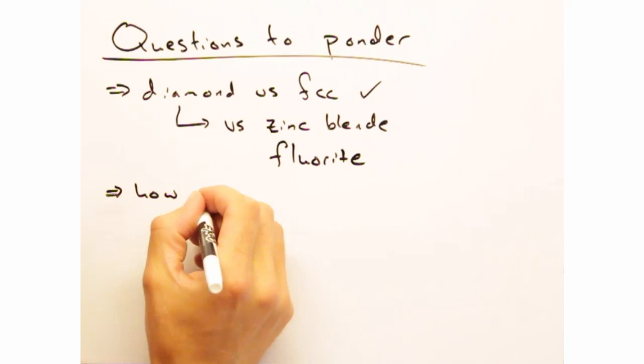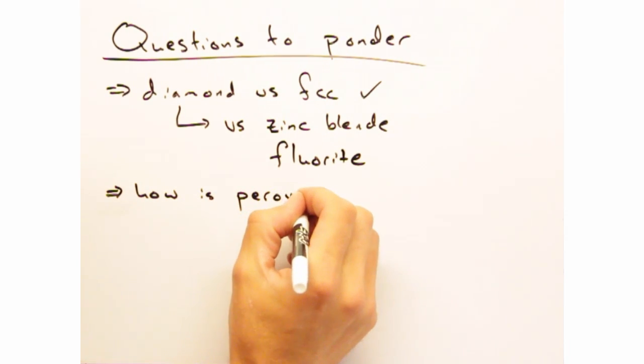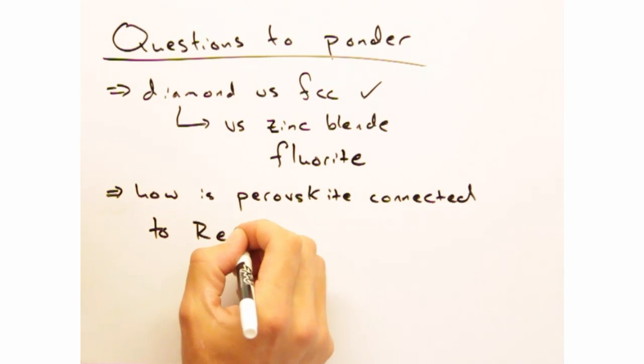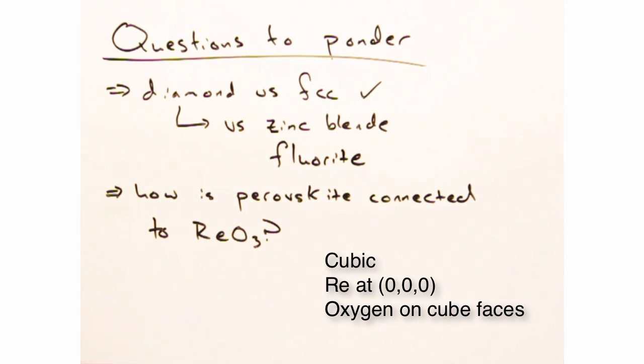Speaking of slices, in a previous video where we looked at slices, we introduced the perovskite structure. How is this structure connected to the rhenium trioxide structure?